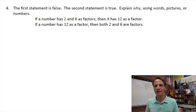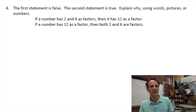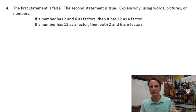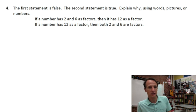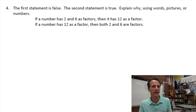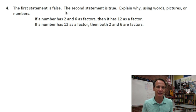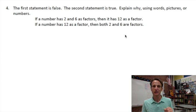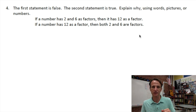Number four has us apply this logic to a true-and-false statement situation, to understand how factors and divisibility rules all work and how the numbers interact. Our instructions say the first statement is false. Let's look at that: if a number has two and six as factors, then it has twelve as a factor. They're telling us that is false — that is not so. The second statement is true: if a number has twelve as a factor, then both two and six are factors.